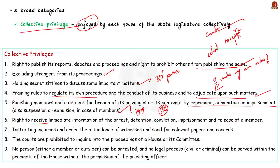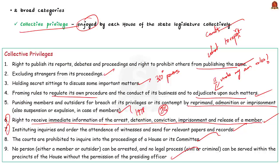Additional collective privileges include instituting inquiries and ordering attendance of witnesses and relevant papers and records. Courts are prohibited from inquiring into proceedings of a house or its committees. No person can be served within the presence of the house without the permission of the presiding officer. The entire premises of the legislature acts as a protective fort for members of the legislative assembly.